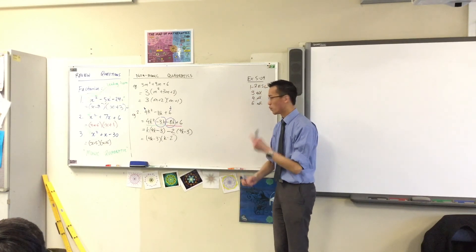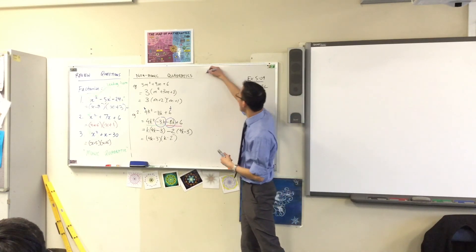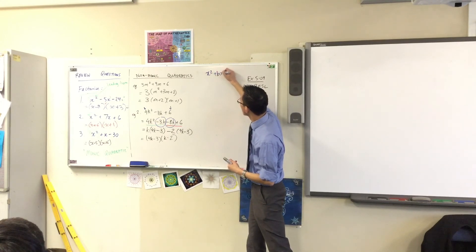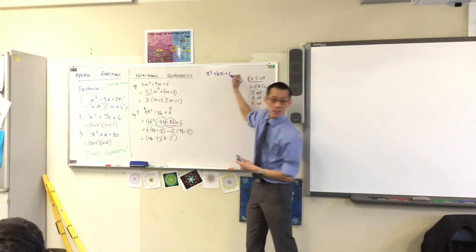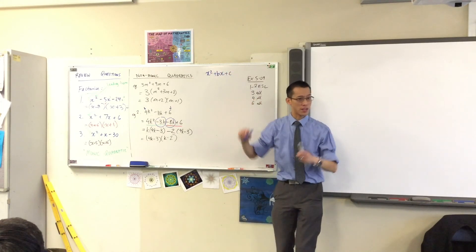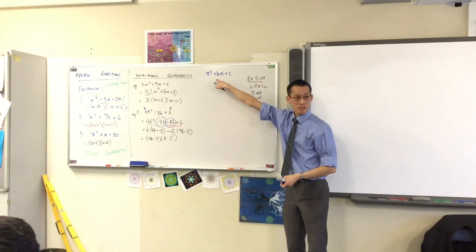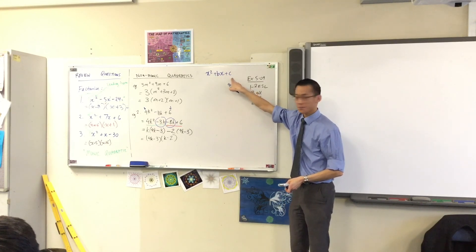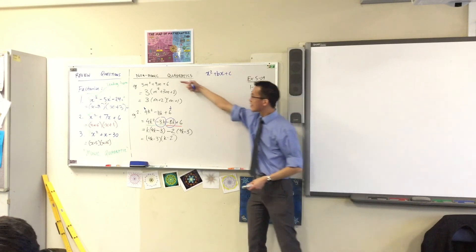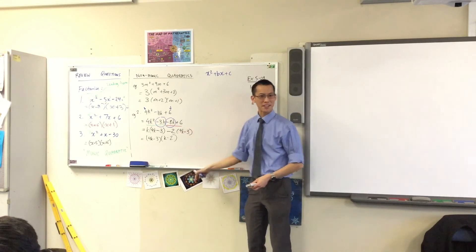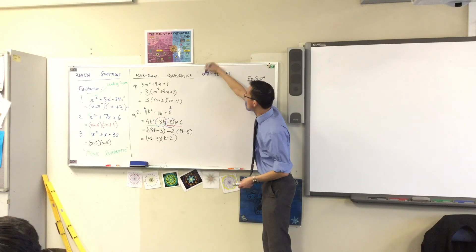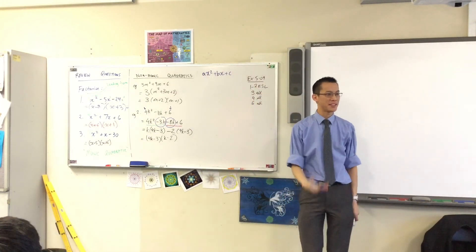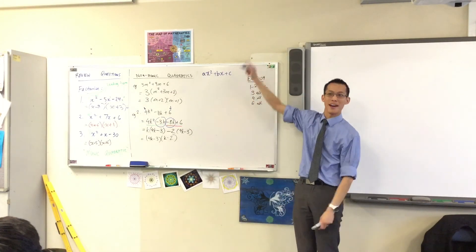Remember, I asked you to write down a guide for what you do. You're thinking of a pair of numbers that adds to B and multiplies to C. Now that there's an extra number at the front, that changes things — and that's why A was hiding before when A was 1.